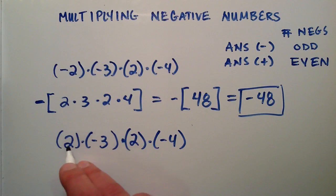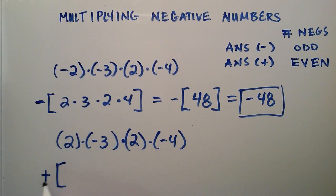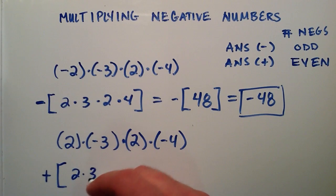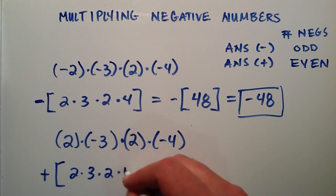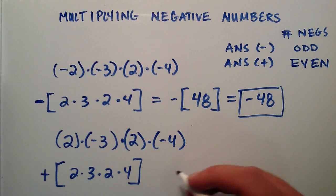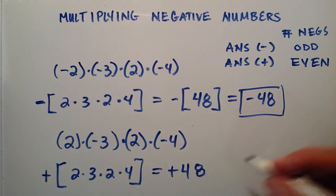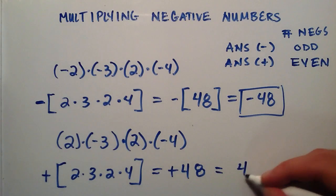So multiplying these together, we know our answer will be a positive number, so we'll just put a plus out here and then we treat these all as positive numbers. 2 times 3 times 2 times 4. 2 times 3 is 6 times 2 is 12 times 4 is 48. This time we have plus 48, which we can simply write as 48.